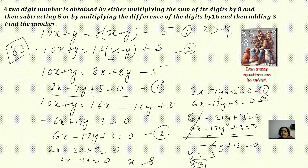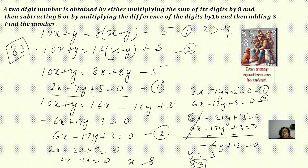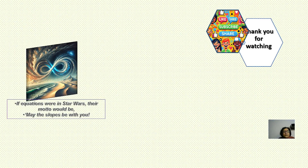You can verify: the sum of digits is 8 plus 3 equals 11. Multiplying by 8 gives 88, and subtracting 5 gives 83. So it is the correct solution. With that, we come to the end of this video. Hope you liked the explanation. Kindly like, share and subscribe to the channel.